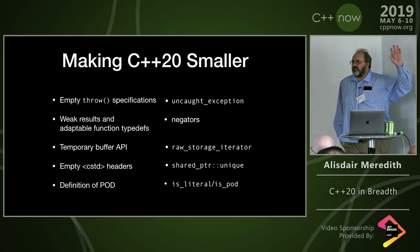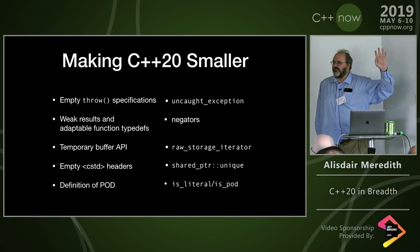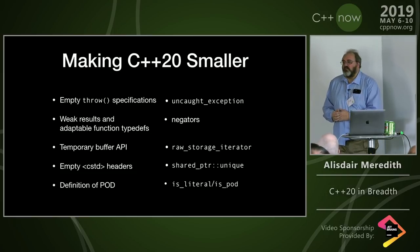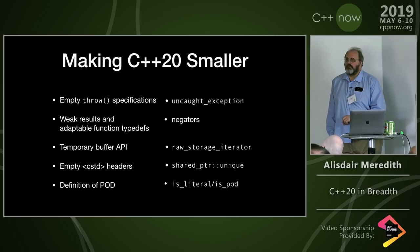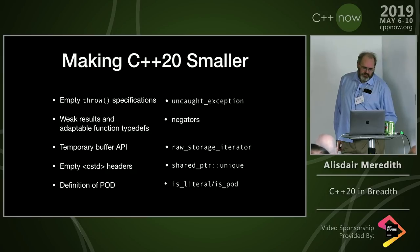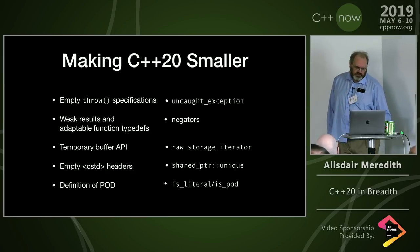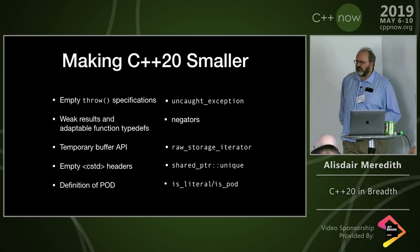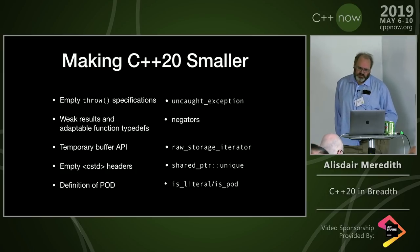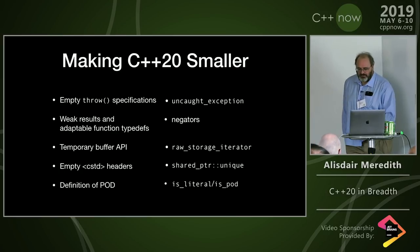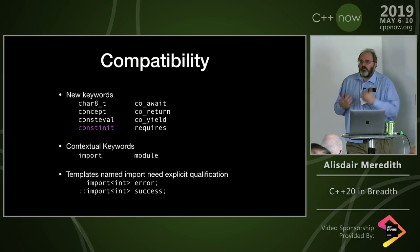Also removed: the temporary buffer API (get_temporary_buffer/return_temporary_buffer), raw_storage_iterator, the C-compatibility cstdXXX headers that did nothing like cstdbool. shared_ptr::unique() is removed — no one should consider that a safe function to use. The is_pod type trait has been deprecated (not removed, as I mistakenly said); the definition of POD in the core language is gone. result_of was also removed and replaced by invoke_result.